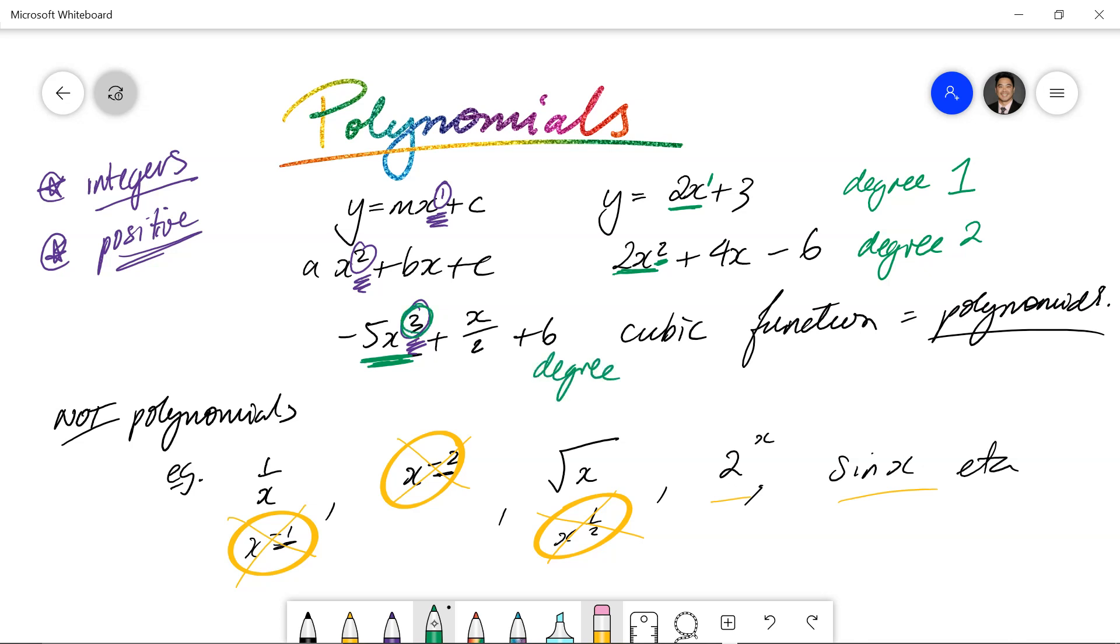And if we were to even write down something where it says x to the power of 4 plus 5x squared minus 3, something like that, the leading term is that term there, because it's got the highest power, and therefore this is degree 4, because that is the highest value of the power in the leading term.